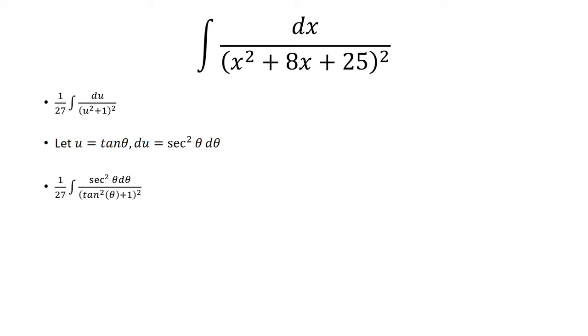So then du is secant squared theta d theta. That goes on top. And then we have tangent squared plus 1 quantity squared. Tangent squared plus 1 is secant squared. We're going to square that. And that simplifies to just 1 over secant squared.